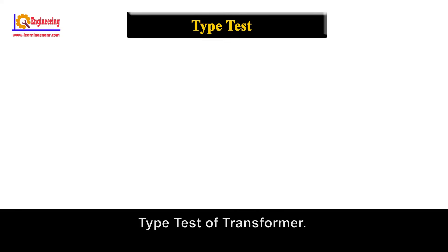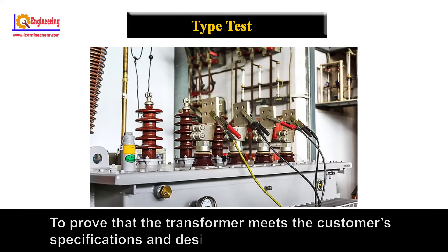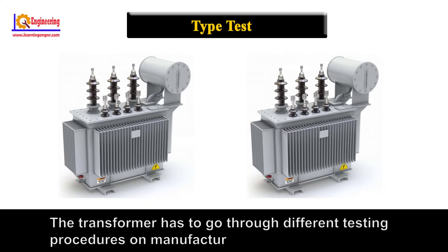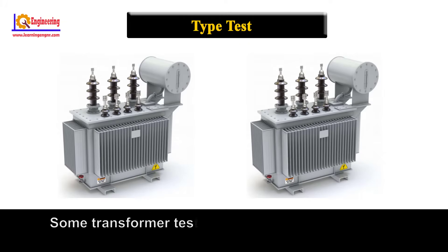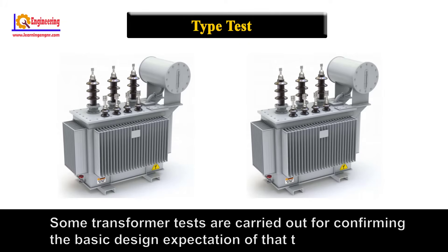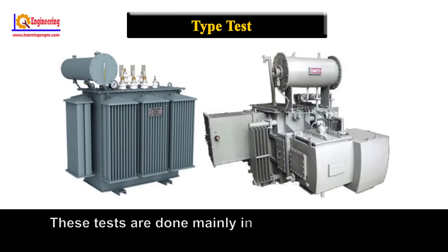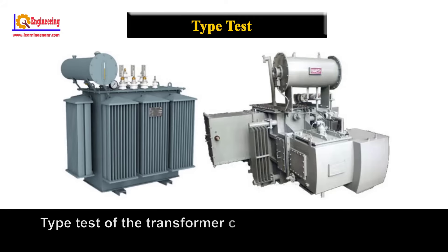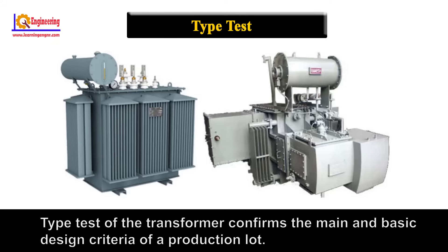To prove that the transformer meets the customer's specifications and design expectations, the transformer has to go through different testing procedures on manufacturer premises. Some transformer tests are carried out for confirming the basic design expectation of the transformer. These tests are done merely on a prototype unit, not on all manufactured units in a lot. Type test of the transformer confirms the main and basic design criteria of a production lot.